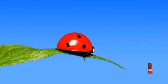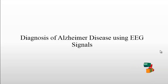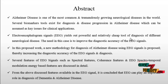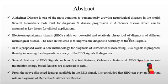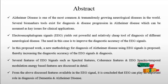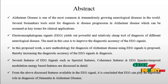Welcome to ClickMyProject.com. Let us discuss the diagnosis of Alzheimer's disease using EEG signals. The EEG is an electrophysiological monitoring method to record electrical activity of the brain. The EEG measures voltage fluctuations resulting from ionic currents within the neurons of the brain.